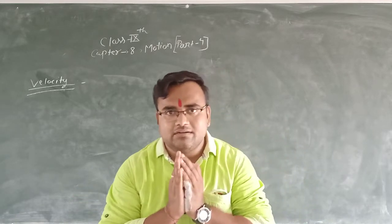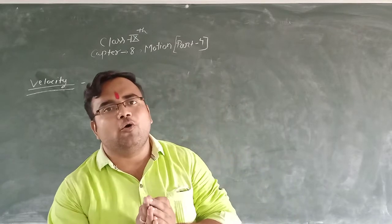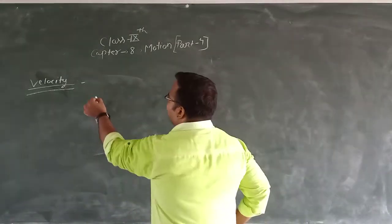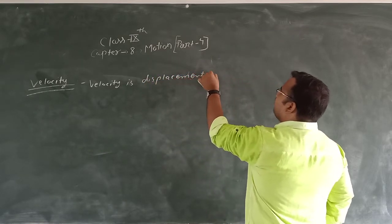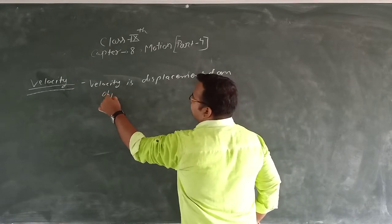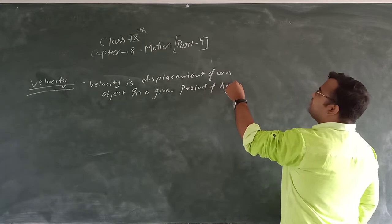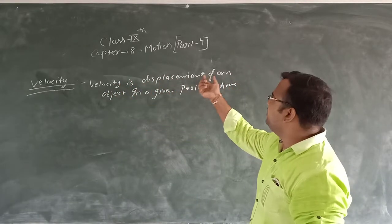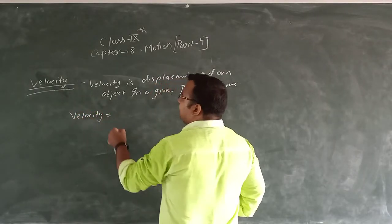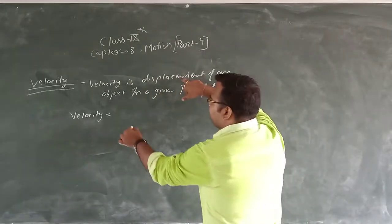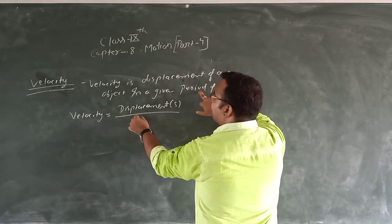Velocity is the displacement of an object in a given period of time. So the formula for velocity is: velocity equals displacement upon time. The unit of displacement is meter and time is in seconds, so the unit of velocity is meter per second. We do not need to memorize the unit separately — by the formula we can derive the unit.